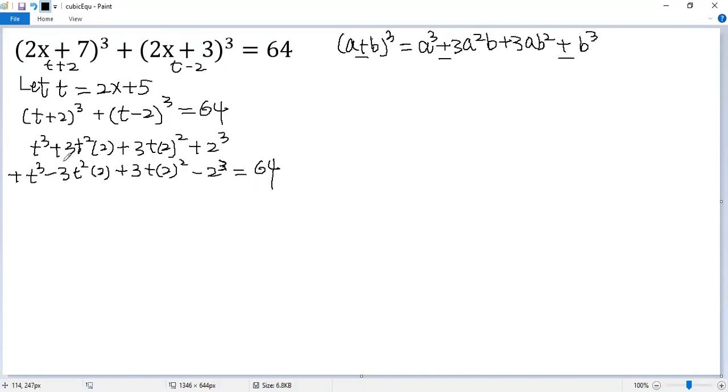So we get t³ - 3t²(2) + 3t(2²) - 2³ = 64. These two terms cancelled, these two terms cancelled. So we get 2t³ plus 2² is 4, 4 times 3 is 12, 12 plus 12 is 24, so 24t minus 64 equals 0.